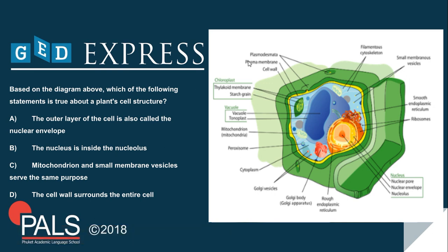Based on the diagram above, which of the following statements is true about a plant's cell structure? A: The outer layer of the cell is also called a nuclear envelope. B: The nucleus is inside the nucleolus. C: Mitochondrium and small membrane vesicles serve the same purpose. D: The cell wall surrounds the entire cell. The correct answer is D — the cell wall surrounds the entire cell. As you can see, there is a lot of information in this diagram, but the question only requires us to know a few pieces of it. By reading the question first, you can narrow down your search rather than trying to read and learn the entire diagram before proceeding.